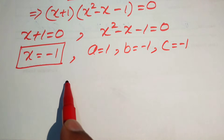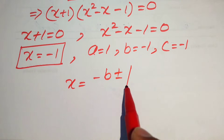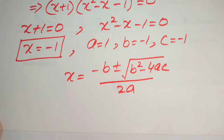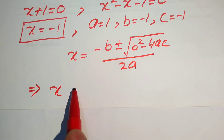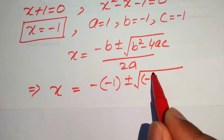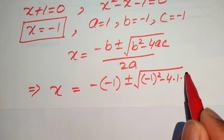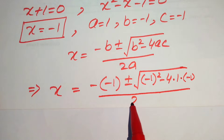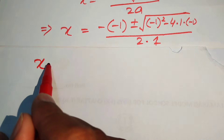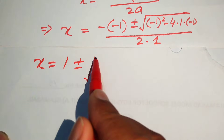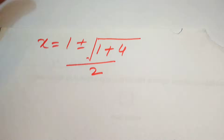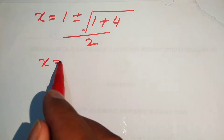The quadratic formula states x equals minus b plus or minus the square root of b squared minus 4ac, all divided by 2a. Substituting: minus into minus 1 plus or minus the square root of minus 1 squared minus 4 times 1 times minus 1, divided by 2 times 1. Simplifying: 1 plus or minus the square root of 1 plus 4, divided by 2.